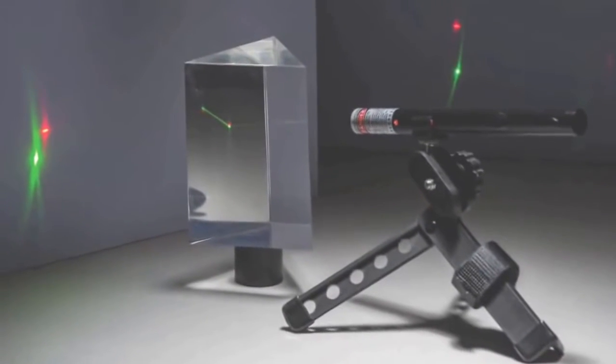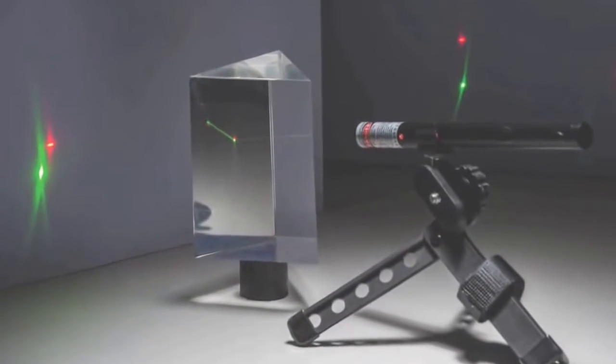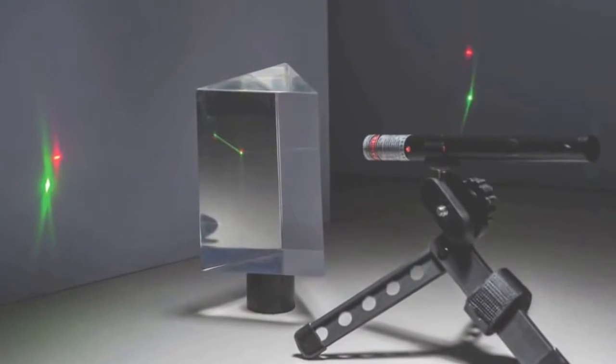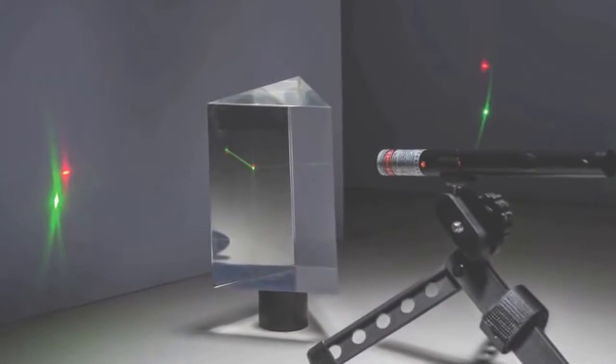Since more refraction or bending occurs with the green laser beam, it must have slowed more passing through the prism due to its higher frequency and shorter wavelength.